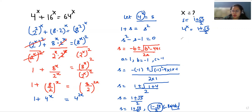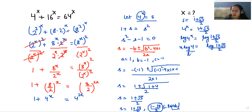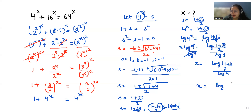Now taking log on both sides: x · log 4 equals log((1 + √5) / 2). Dividing both sides by log 4, we get x equals log((1 + √5) / 2) / log 4, which can be written as x equals log base 4 of ((1 + √5) / 2). This is the value of x.